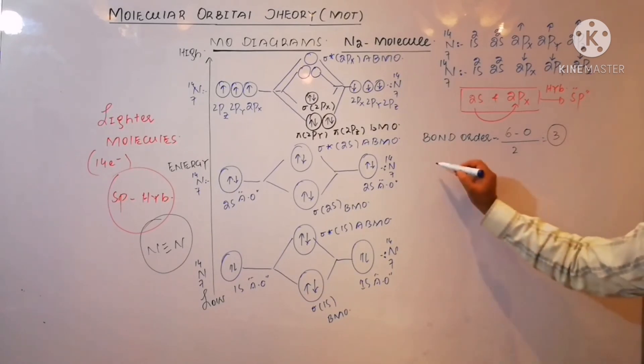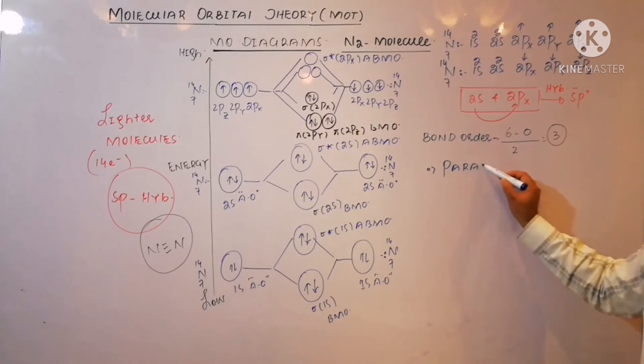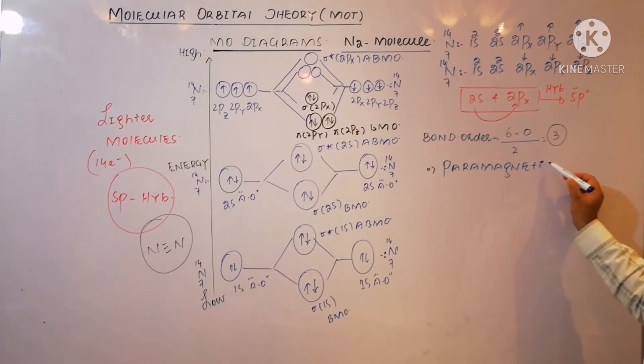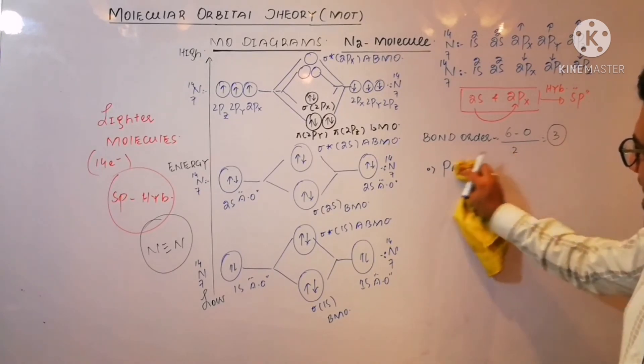Paramagnetic or diamagnetic? Because all electrons are paired, so it must be diamagnetic.